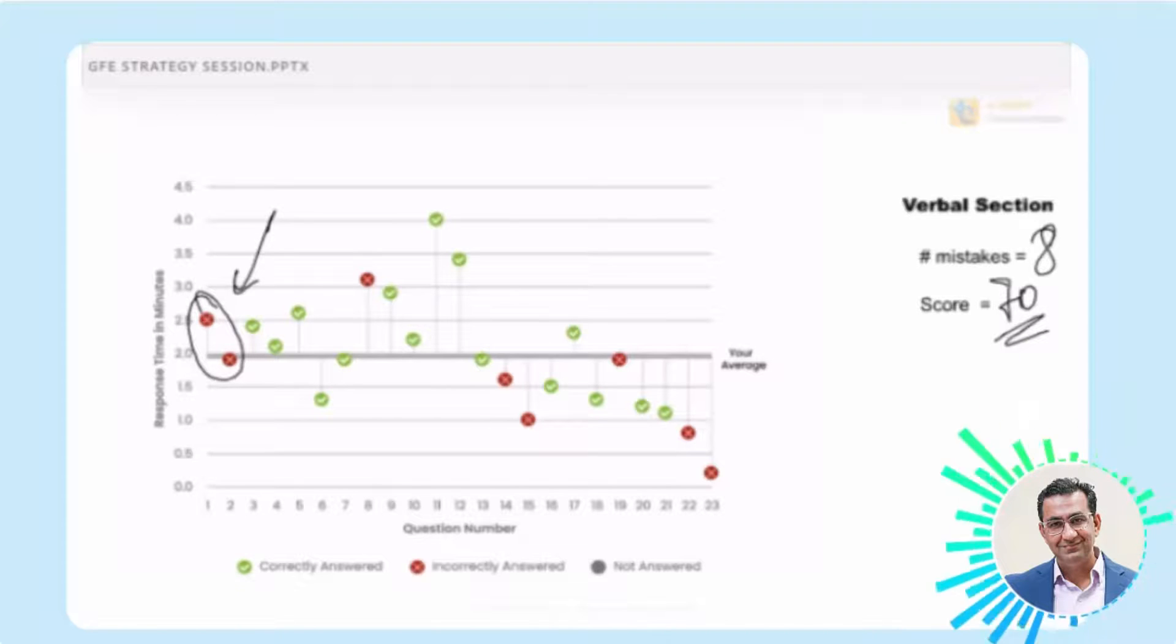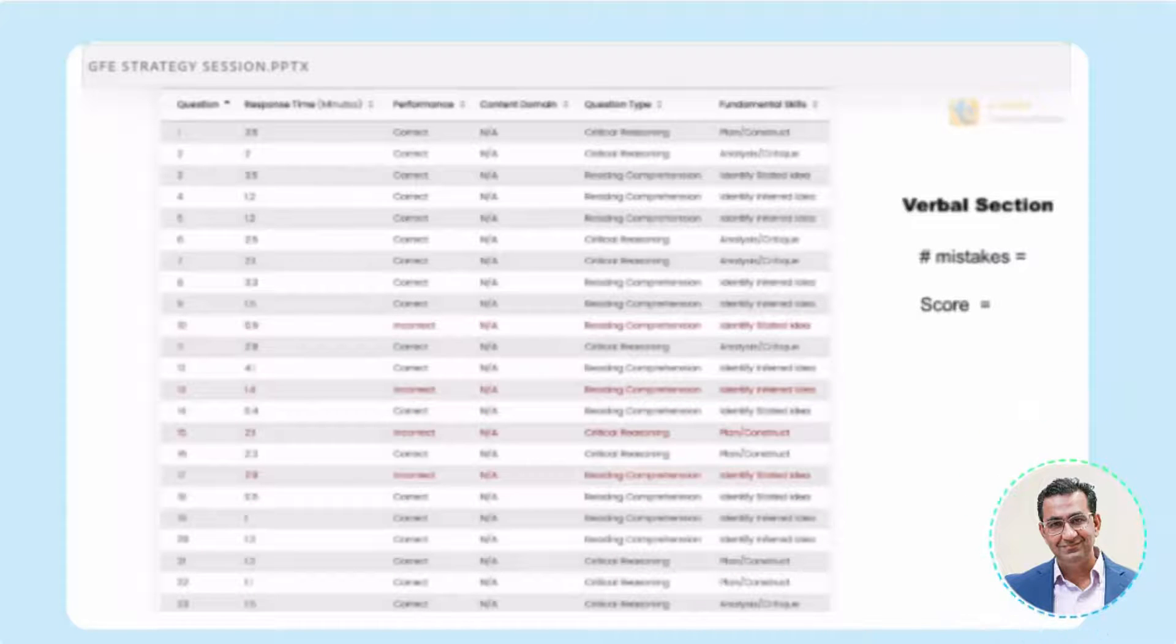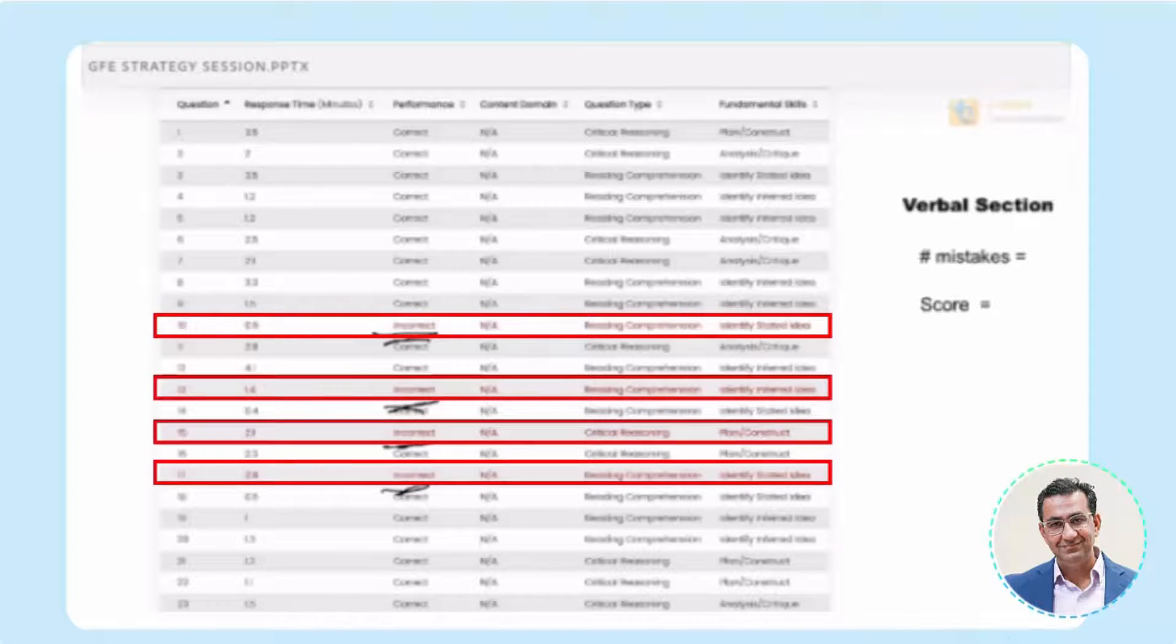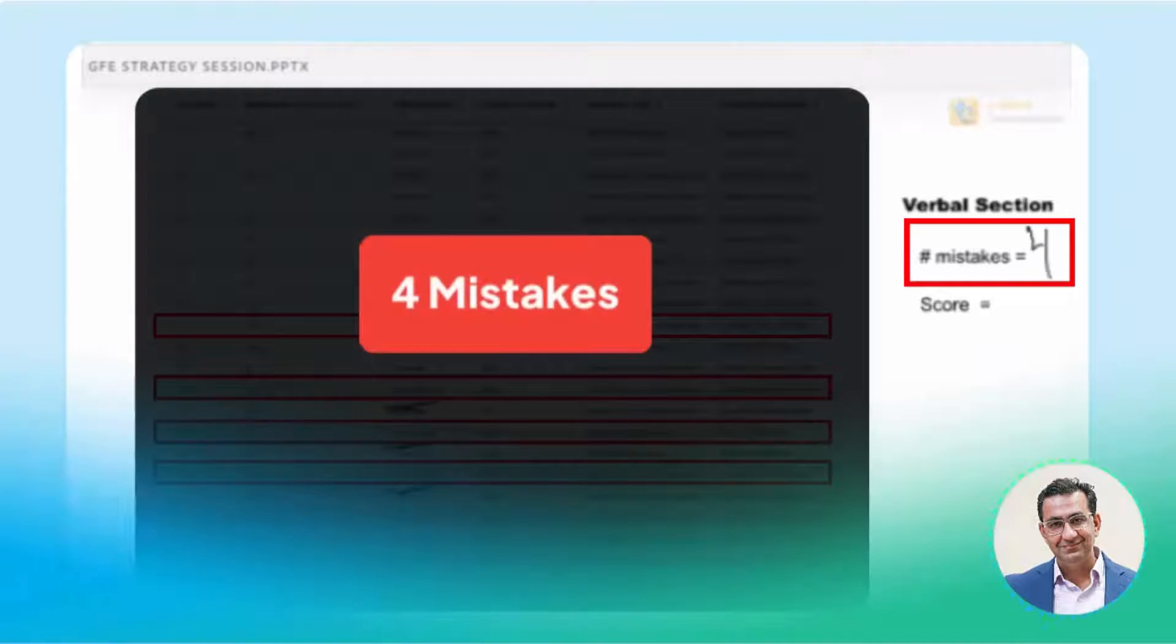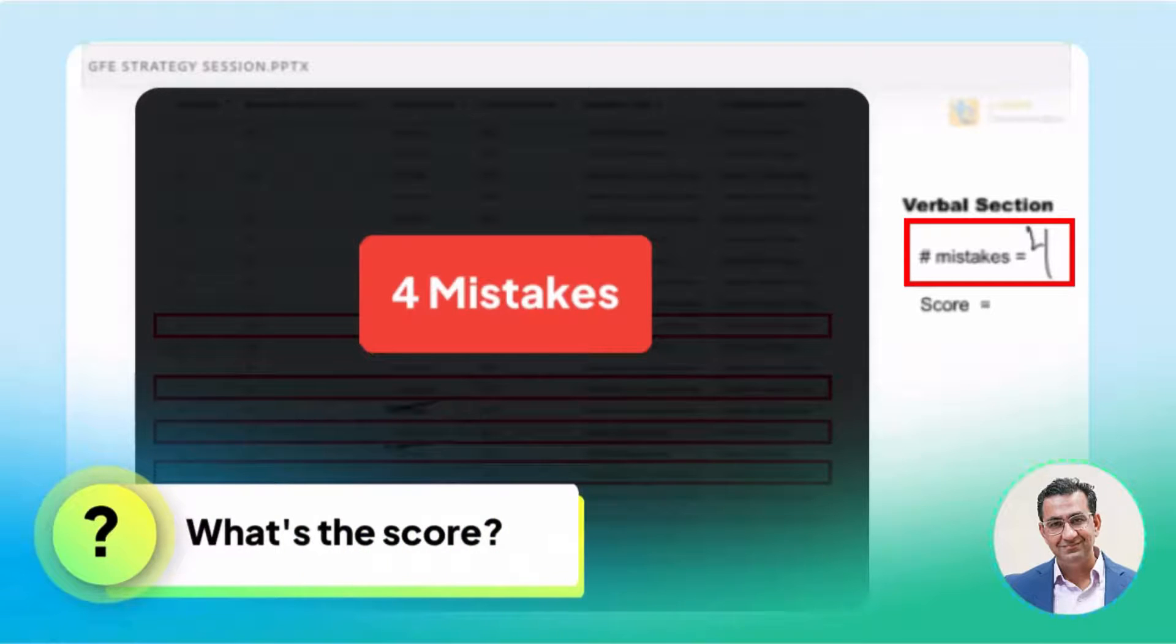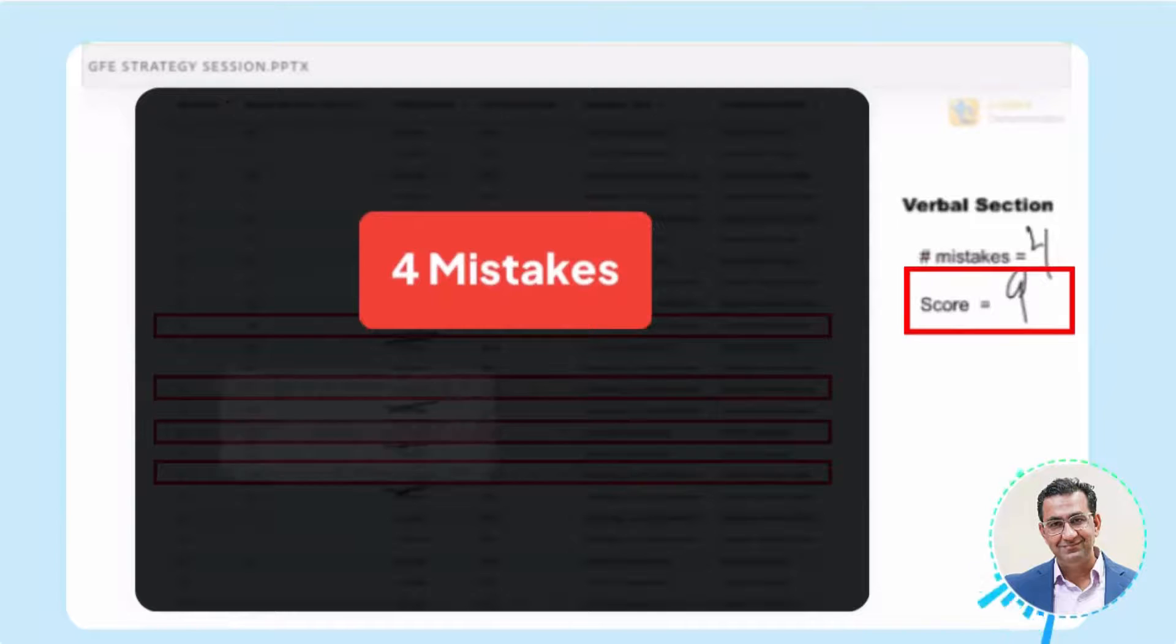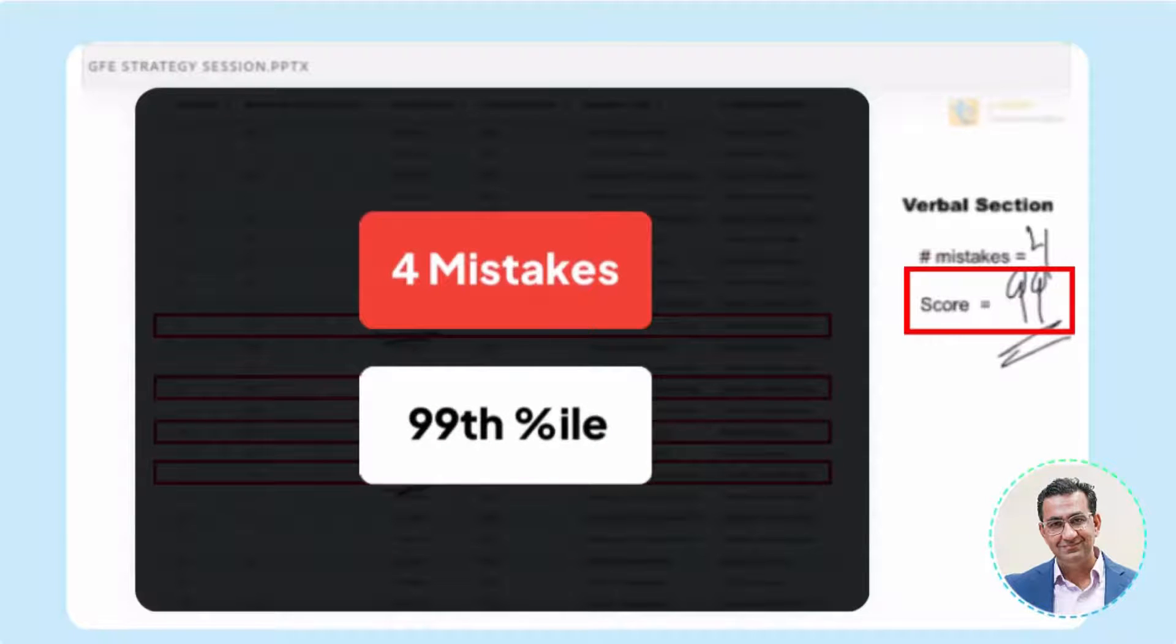Okay. Let's look at another one here. This is one of our students. And I'm going to point out the mistakes that he made. One, two, three, four. Four mistakes here. What do you think? Four mistakes. What's the score? Most of you are getting it right. 99th percentile. Okay.